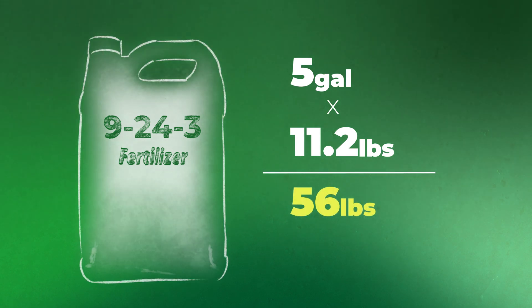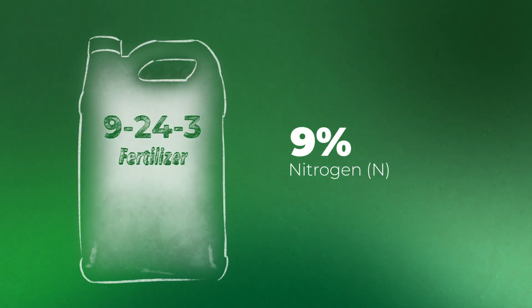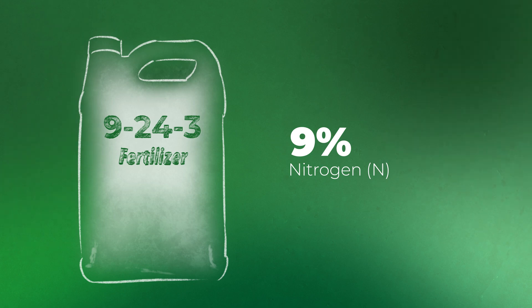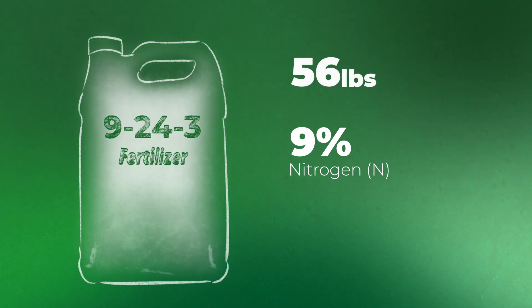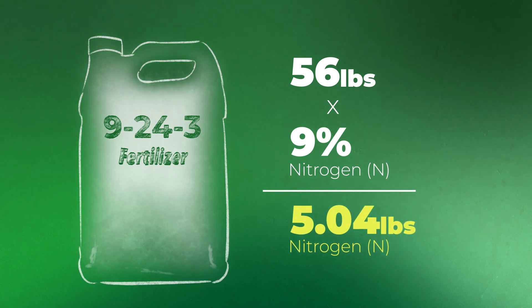When we look at the 9-24-3, that 9 is going to represent 9% nitrogen in that solution. So we take our total pounds of product — 56 pounds — and multiply that by 9%. That gets us right at a little over 5 pounds of nitrogen in that application. So in those 5 gallons, we're going to get right at about 5 pounds of nitrogen.